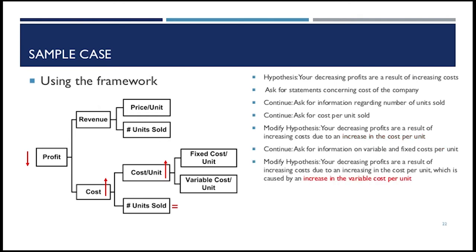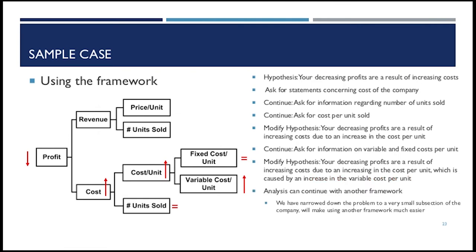Going further down the tree, I ask about fixed and variable costs. I'm told fixed cost per unit has stayed about the same, but variable cost per unit has actually increased. So I modify my hypothesis again: the increase in cost per unit was caused by an increase in variable cost per unit. At this point, just by asking simple questions, I've discovered a key problem. I could now use another framework to specify which variable cost is the issue — labor, for example, which came up last week.